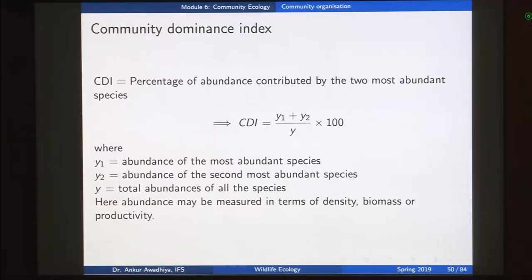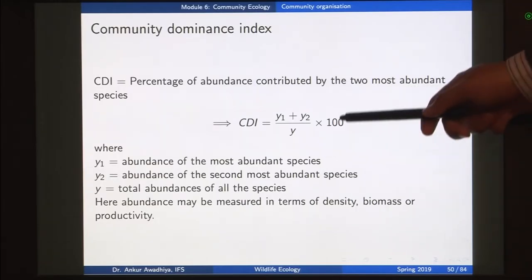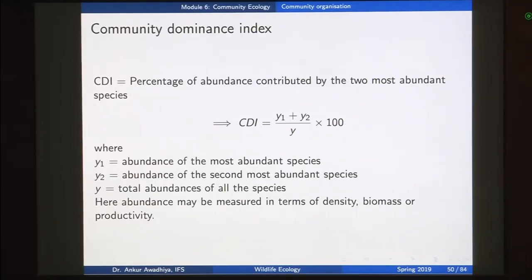The question we are asking is: is this community turning towards a monoculture or biculture where you see only two species everywhere, or is it a more diffused community with more different species found across all regions? CDI = (y1 + y2) / y × 100%.